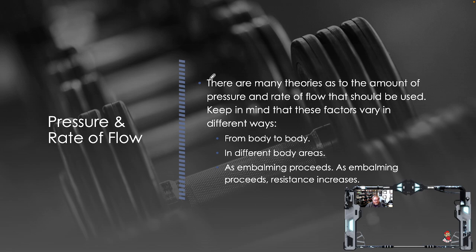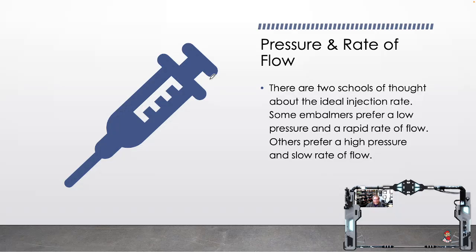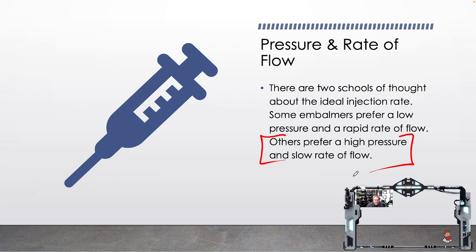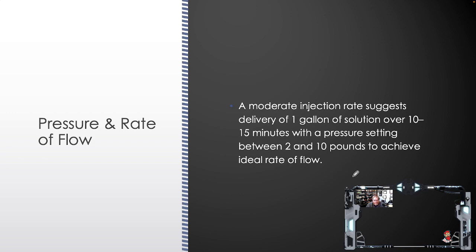There are many theories as to the amount of pressure and rate of flow that should be used. These factors vary from body to body, in different body areas, and as embalming proceeds — as the liquid fills, there will be increasing resistance. There are two schools of thought: some embalmers prefer low pressure and rapid rate of flow; others prefer high pressure and slow rate of flow. A moderate injection rate suggests delivery of one gallon of solution over 10 to 15 minutes with a pressure setting between 2 and 10 pounds to achieve ideal rate of flow. That is perfectly acceptable.